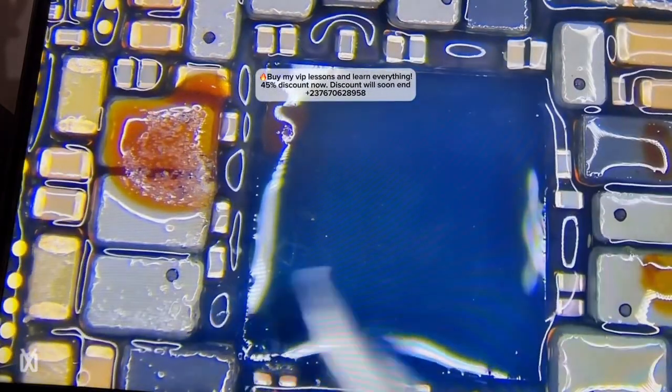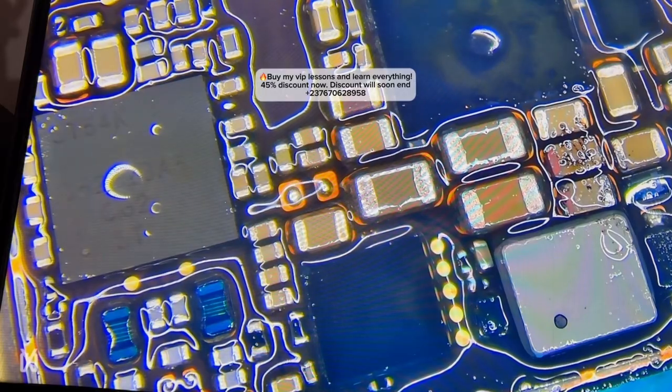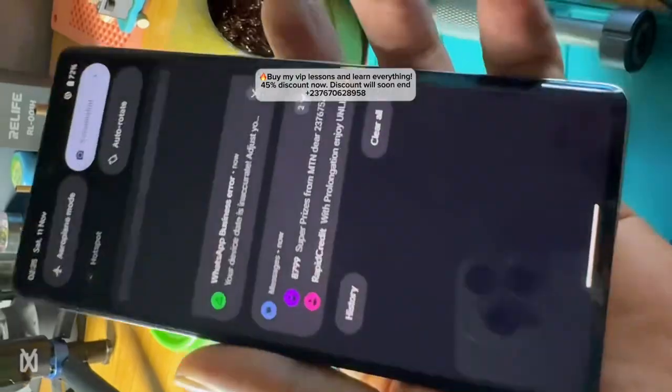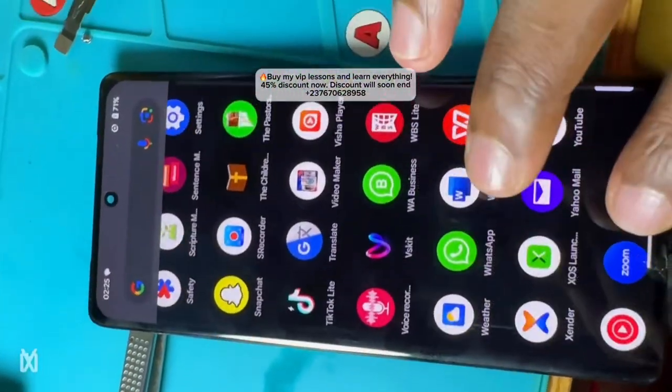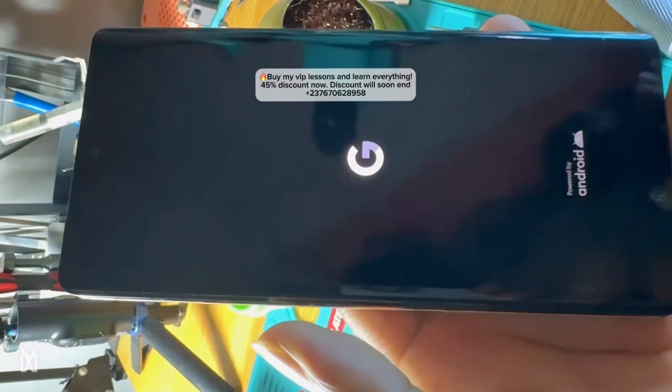Then we cleaned the PCB. You can see all the sides where we sprayed the rosin flux we had to clean, and everything is working right here.